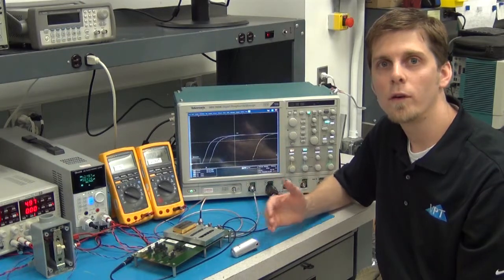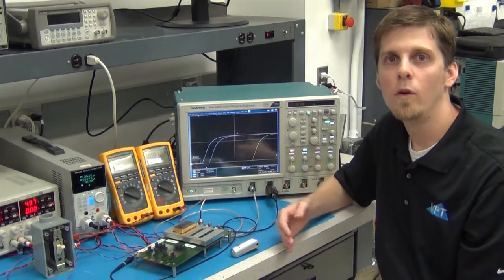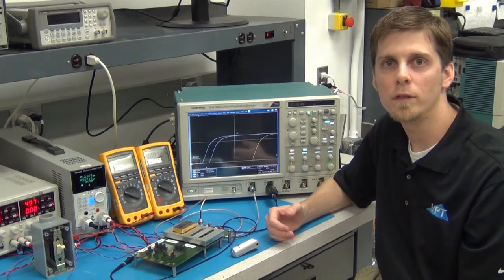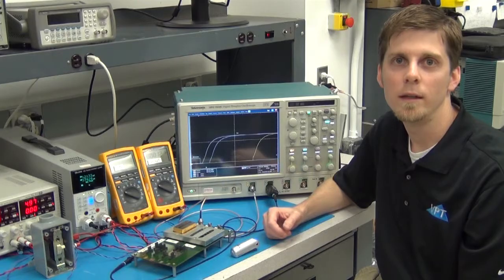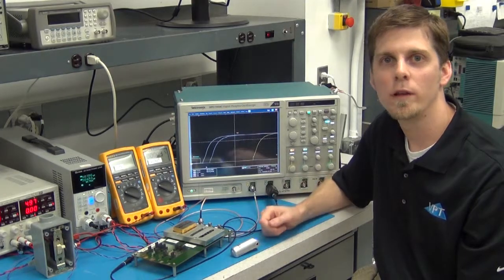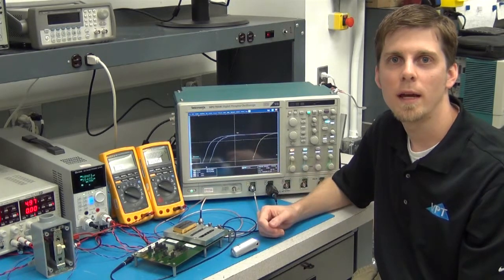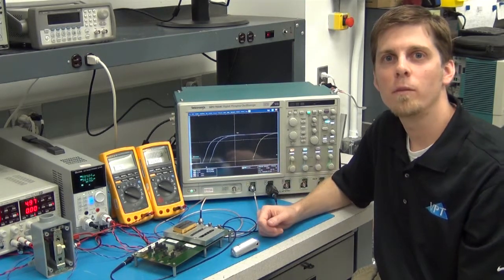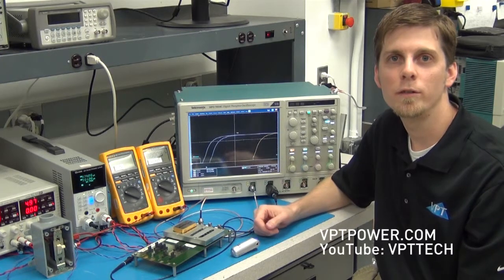So if you have multiple converters and you need to delay some outputs from coming up or you need a specific delay for your system, you can adjust that capacitor to get the delay that you need. Thank you for watching. If you have any further questions about implementing your inhibit circuit, please contact us. And be sure to check out more videos available on vptpower.com or on our YouTube channel.